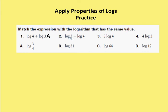Number 2: log base 10 of 3 minus log base 10 of 4 gives me log base 10 of 3 divided by 4. This is going to be A.